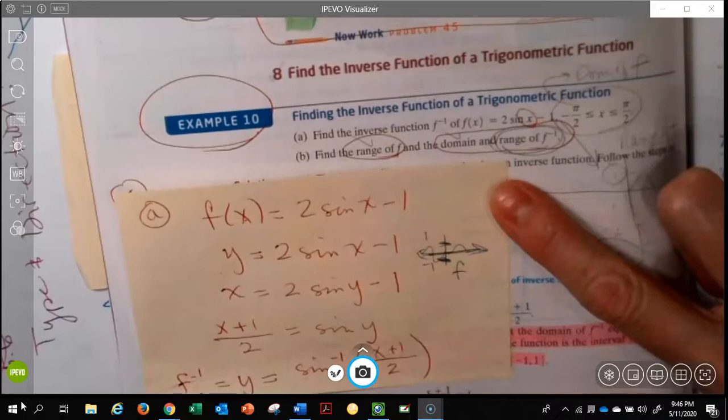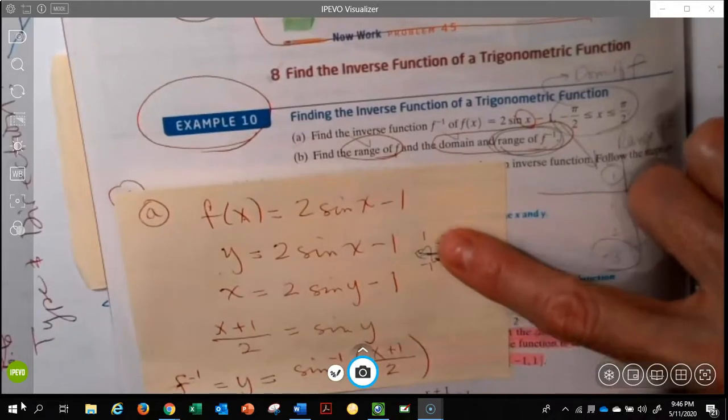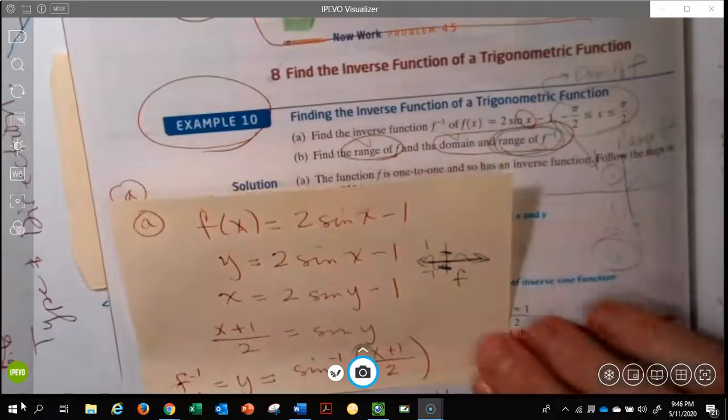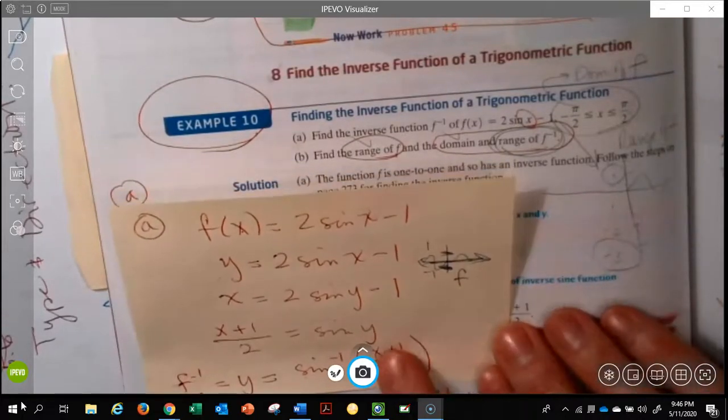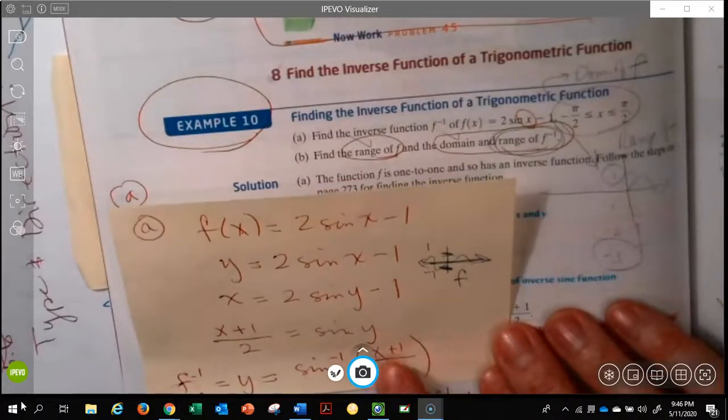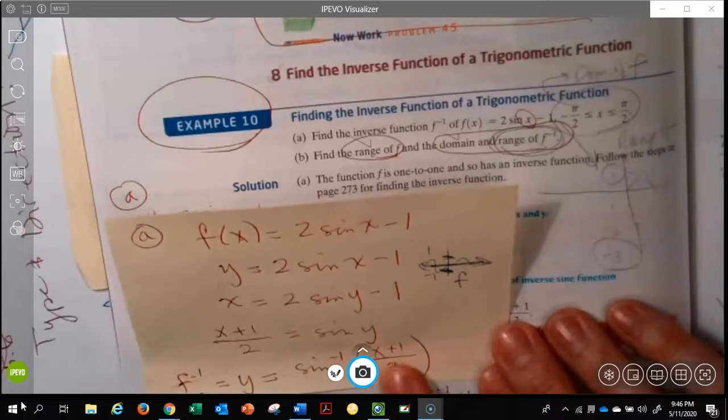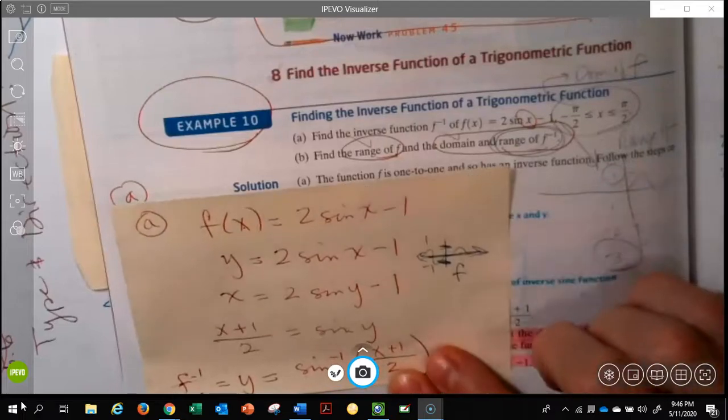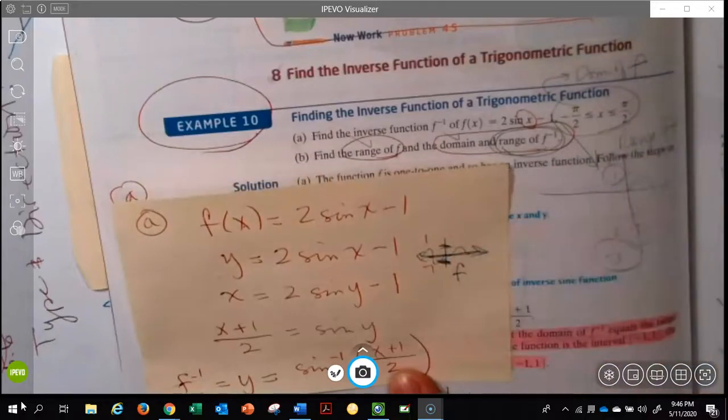So the range of the function is 1 to negative 1. Well, if this is the range of the function, then it's going to be the domain of what's going on inside of here. With that in mind, this argument, this piece inside of here, belongs to, relates to, this 1 and negative 1. So with that in mind, we're going to put that x plus 1 over 2 in between what it can be.